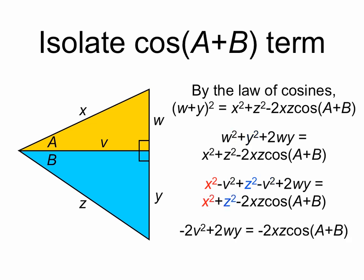And now notice that we have x squared and z squared on both sides of this equation, so they cancel out, leaving us minus 2v squared plus 2wy equals minus 2xz cosine a plus b.